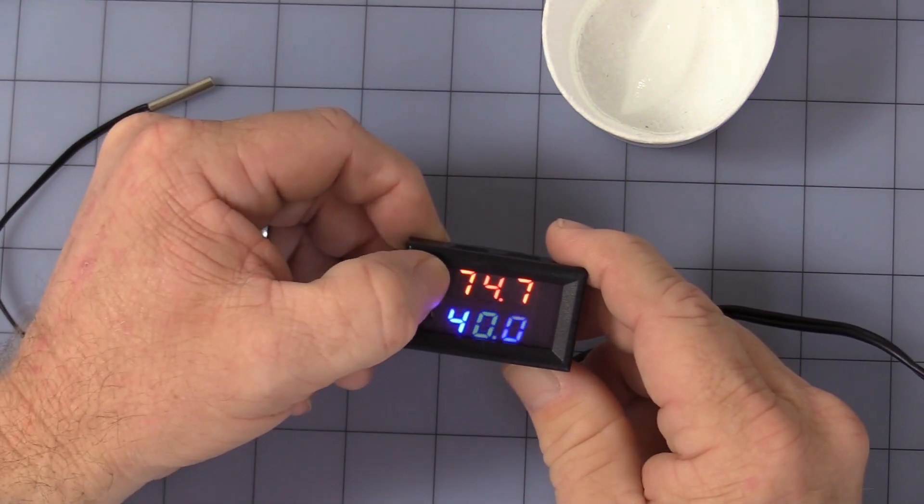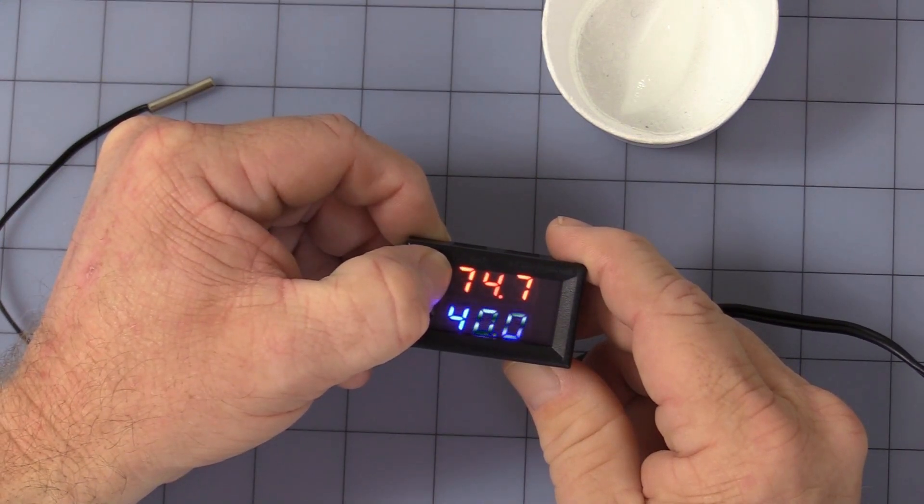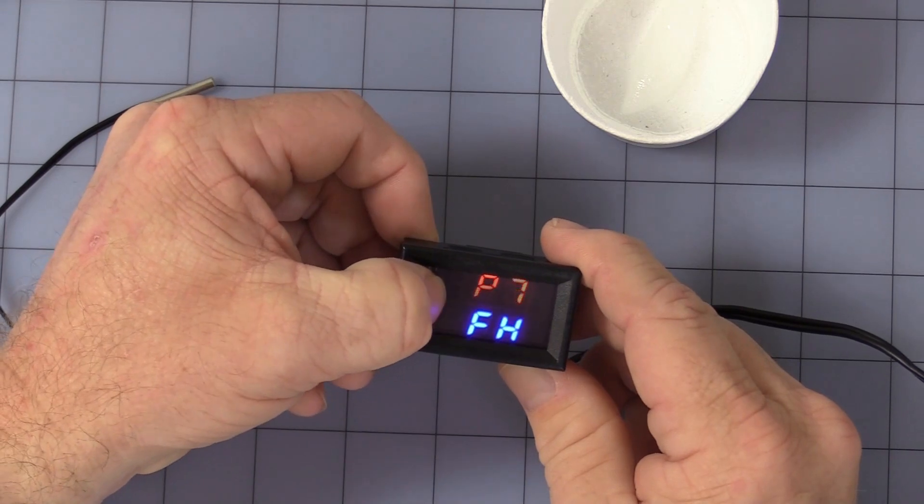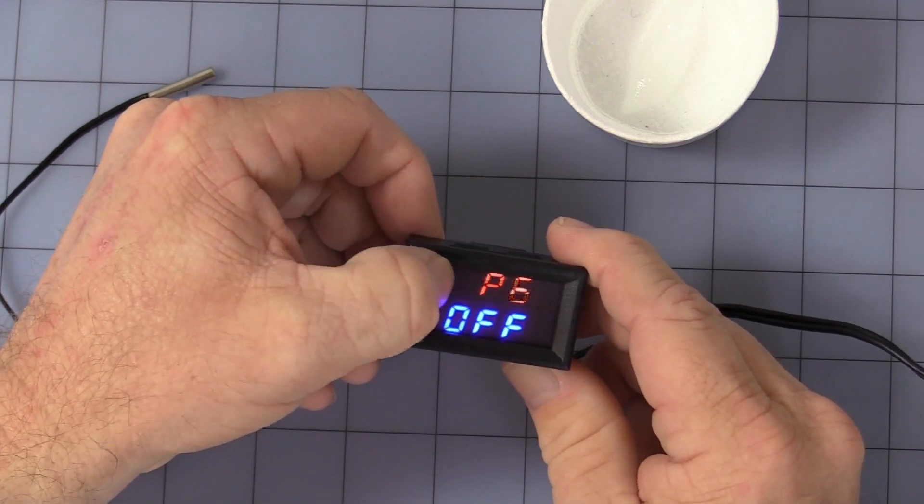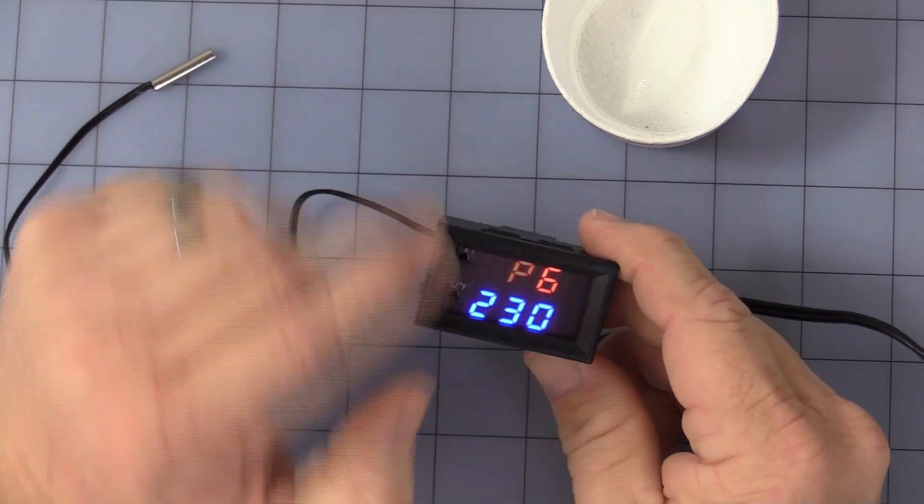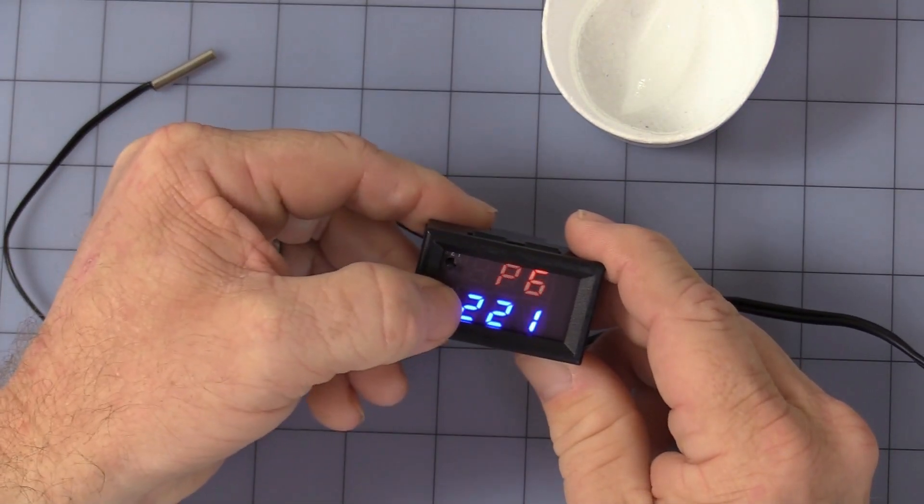Now, we get into P6, which is a high-temperature alarm. This is a little interesting and a little tricky. P6 comes turned off, press and hold both buttons, turn it on. While it's still flashing, press both buttons again, and it comes factory set at 230 degrees.